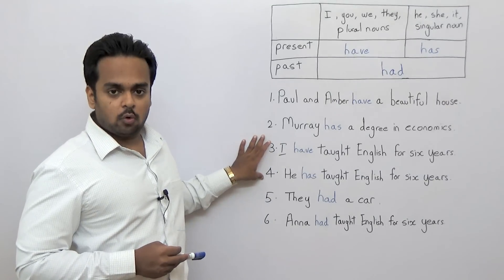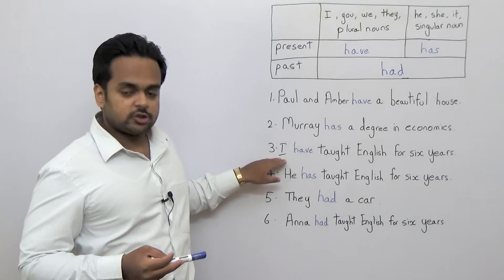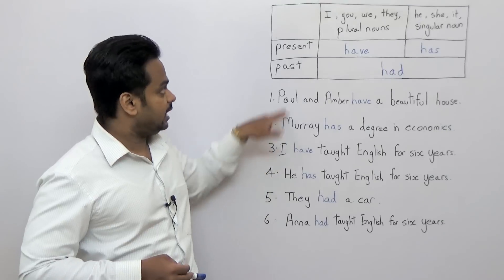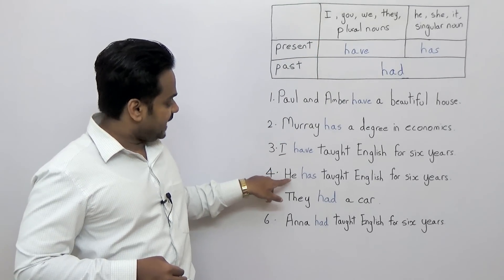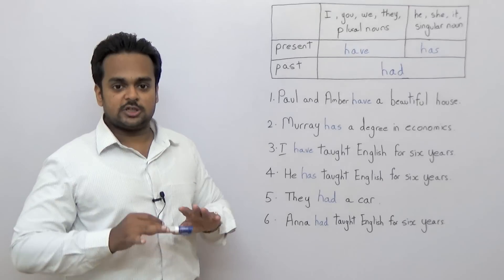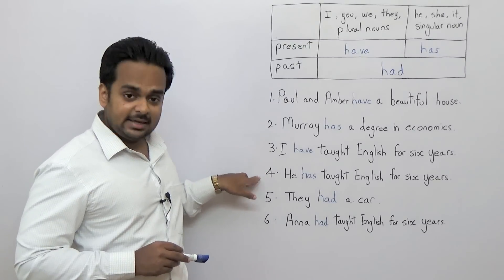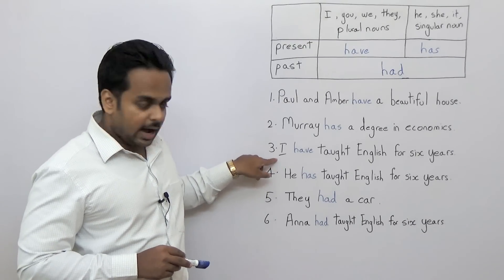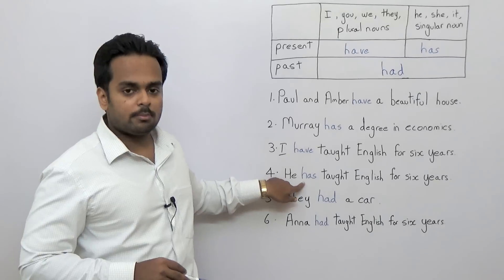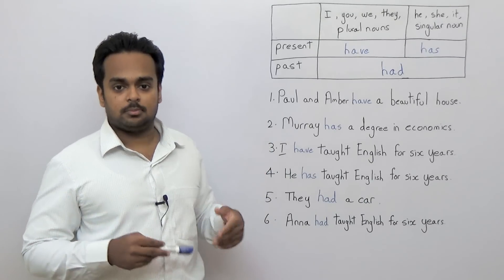Here I have two sentences in the present perfect tense. 'I have taught English for six years' — we're using 'have' because the subject is I. But look at this sentence: 'He has taught English for six years.' Both sentences are basically the same; the only difference is the subject — I here, and he here. Because the subject is I, the verb is 'have,' and because the subject is he, the verb form becomes 'has.' That is the only difference. So all of these are sentences in the present tense.